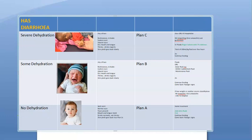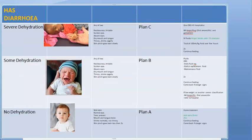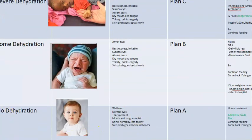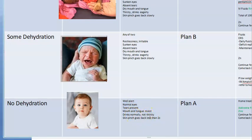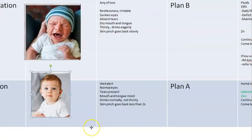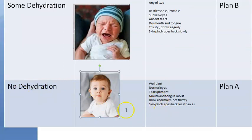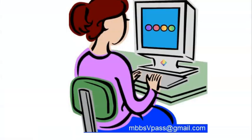A non-dehydrated child will appear totally normal with no scary symptoms. The child will be well and alert, with normal tears present, moist mouth and tongue, and drinking normally without being thirsty. The skin pinch goes back in less than two seconds. Note this may not apply in marasmus or obesity, but these are the general rules to say no dehydration is present.